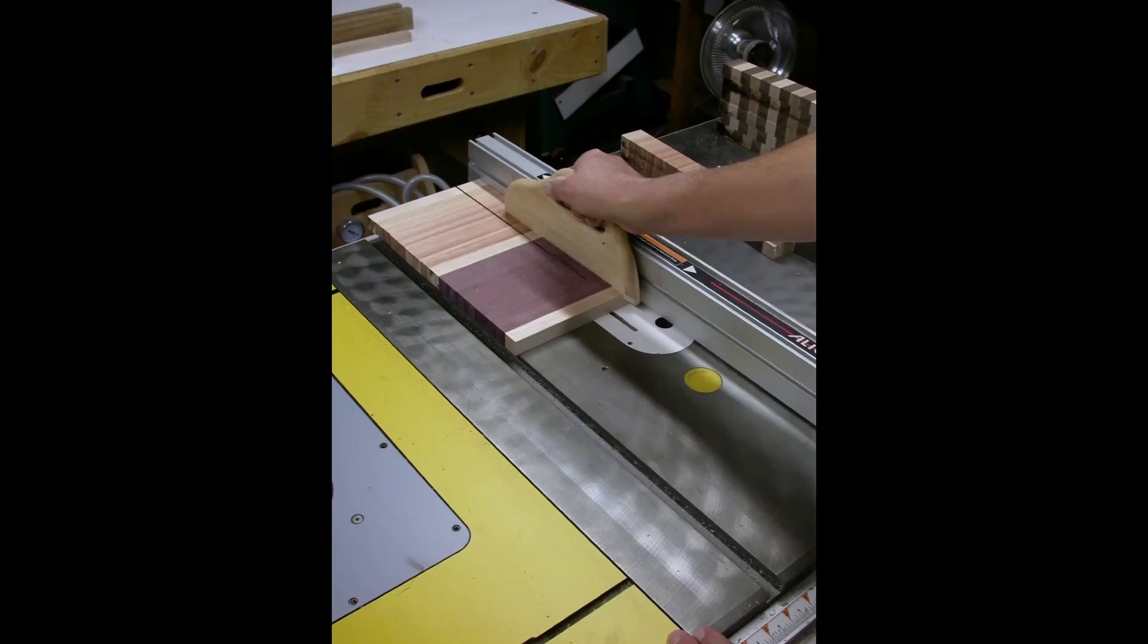Next begin cross cutting the glue ups. First square up one edge with a cross cut sled at the table saw. Then set the fence to one and three eighths inch and cross cut each glue up into six pieces.